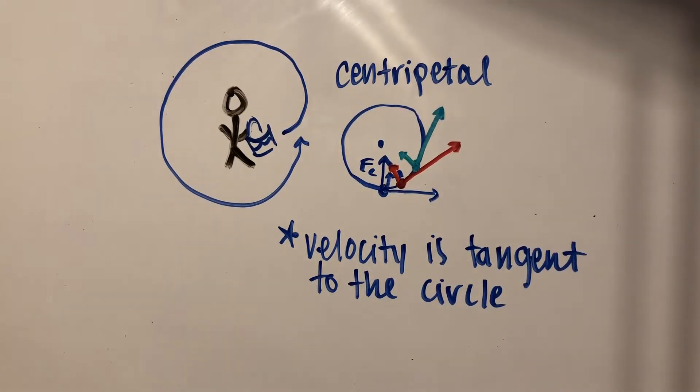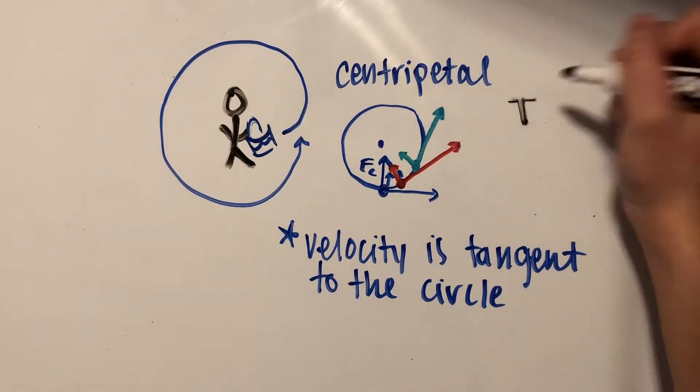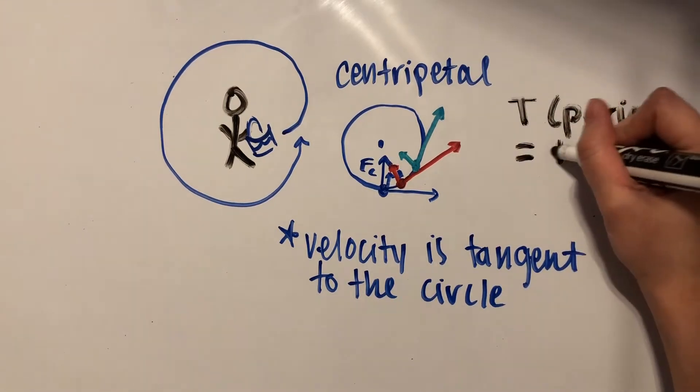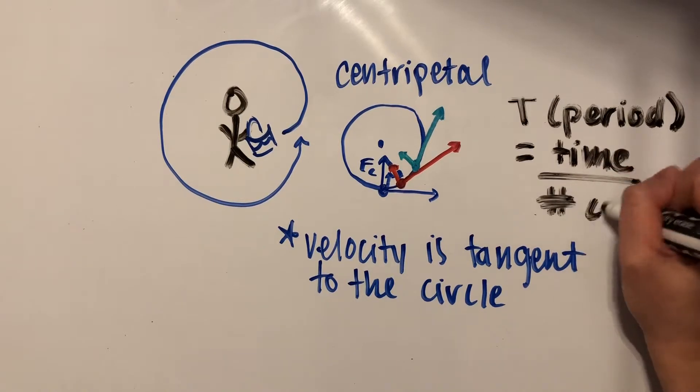We can also describe circular motion using the variable T, which is the period. That's going to be equal to the time it takes over the number of cycles.